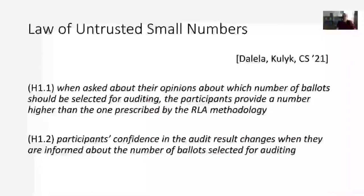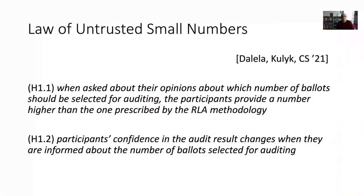Our findings confirmed what I call the law of the untrusted small numbers. We had two hypotheses. Hypothesis 1.1: when asked about their opinions on how many ballots should be selected for auditing, participants provide a number higher than the one prescribed by the RLA methodology. Hypothesis 1.2: participants' confidence in the audit results changes when they are informed about the number of ballots actually selected for auditing. Both hypotheses were confirmed.